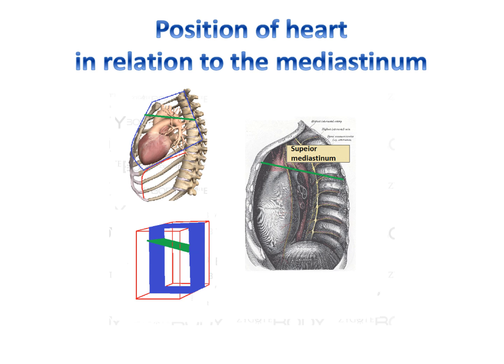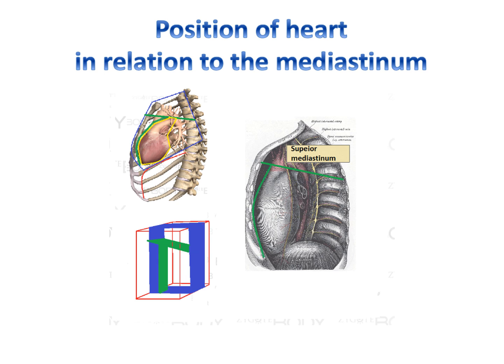The inferior mediastinum extends from the upper level of the pericardium onto the diaphragm, and is subdivided into three regions, all relative to the pericardium.